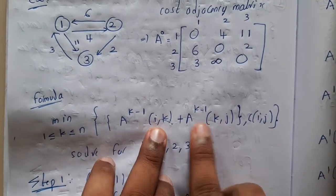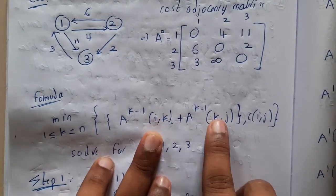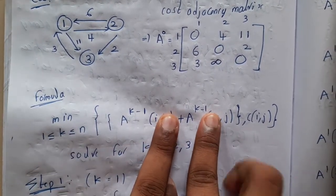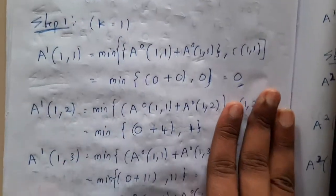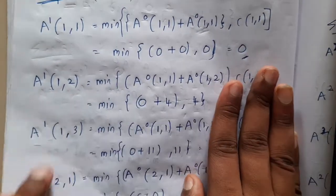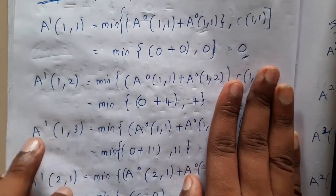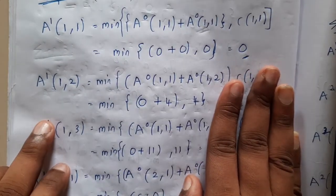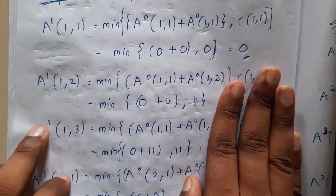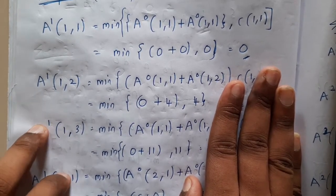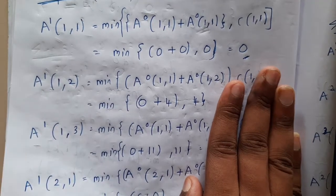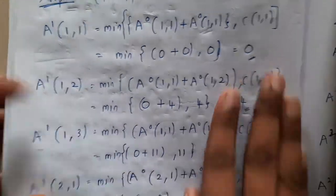So A^(k-1)[i,k] + A^(k-1)[k,j] — if you close these two you'll be getting i,j. For example, A^1[1,3] will be [1,1] + [1,3]. That's how it works.